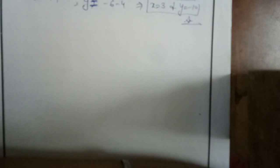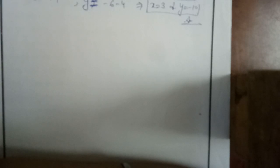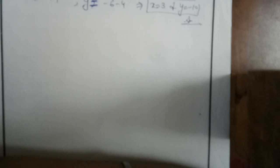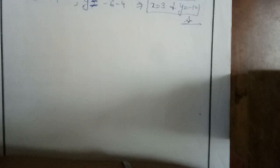During a sale, a shop offered a discount of 10% on the marked price of all items, meaning the shopkeeper gives 10% discount. What would the customer have to pay for a pair of jeans if the marked price is Rs. 14.50, and two shirts with marked price Rs. 8.50 each?